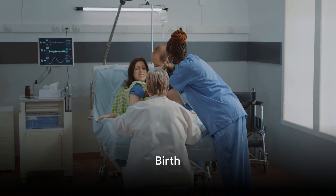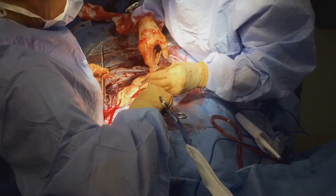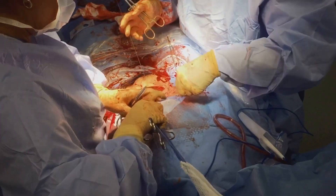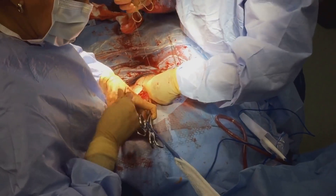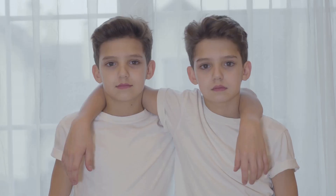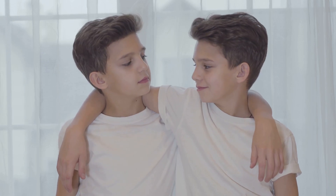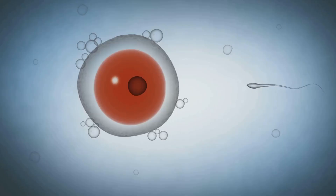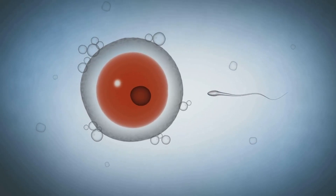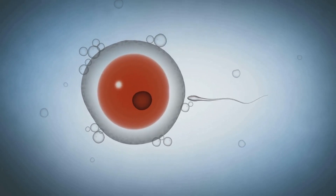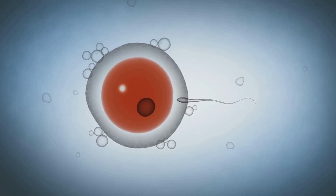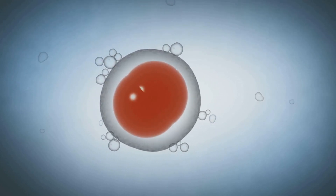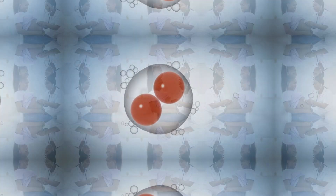Birth, or parturition, is the grand finale of the reproductive process. It can occur naturally or via a cesarean method, depending on the circumstances. Twins add another layer of complexity to reproduction. Identical twins result from a single fertilized egg splitting into two, while fraternal twins occur when two separate eggs are fertilized.